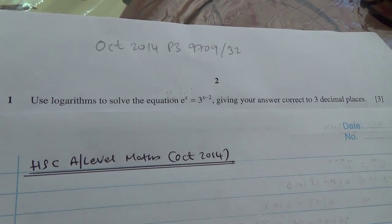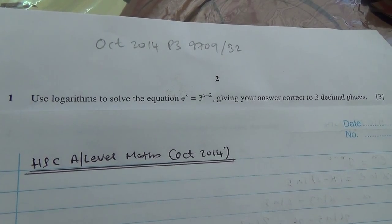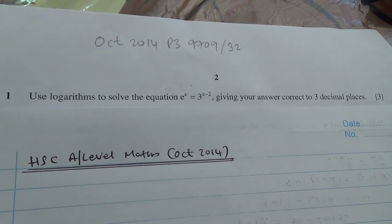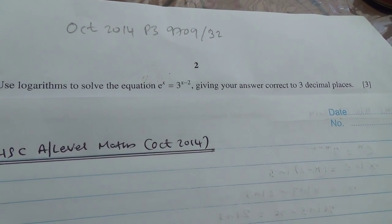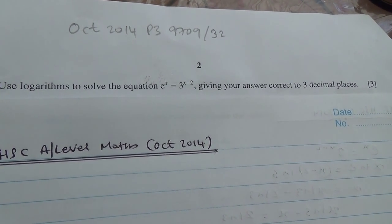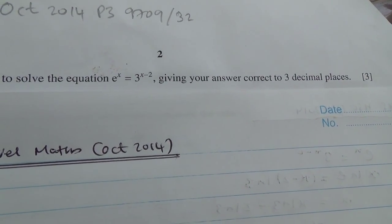Question number 1, taken from October 2014 of HSC Advanced Level Maths, P3. Use logarithms to solve the equation e to the power of x is equal to 3 to the power of x minus 2, giving your answer correct to 3 decimal places, 3 marks.